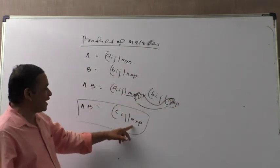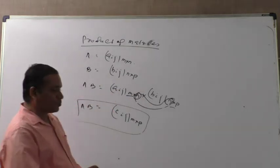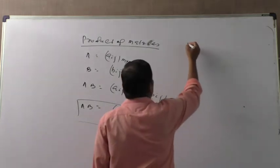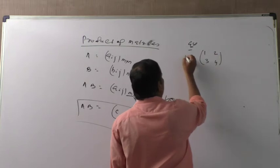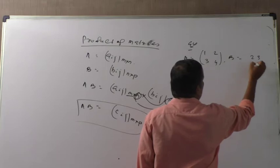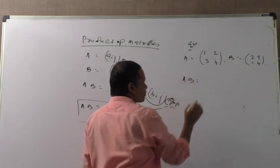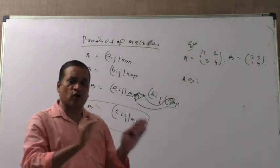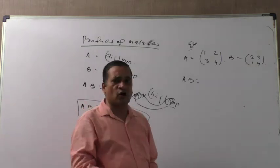So this multiplication is possible. Now, how to find the product — suppose we take an example. Matrix A is [1, 2; 3, 4] and matrix B is [2, 3; 1, 4]. We need to find the product AB. The corresponding rows and columns are multiplied.